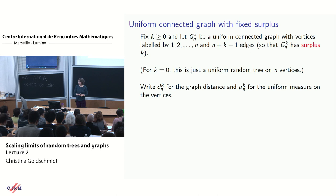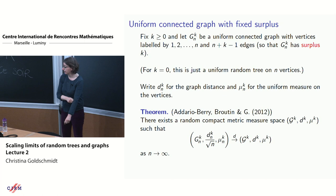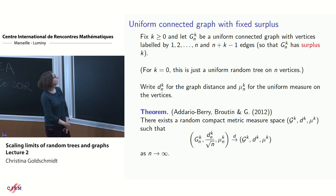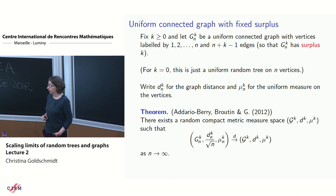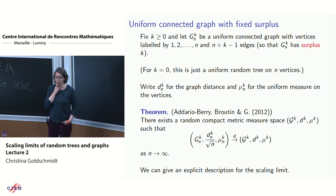Write d^{n,k} and μ^{n,k} for the graph distance and uniform measure on the vertices of G(n,k). Our theorem is that there exists a random compact metric measure space (d_k, μ_k) which is the scaling limit under the same rescaling as the uniform random tree: rescale distances by 1/sqrt(n). We'll give an explicit description of the limit.